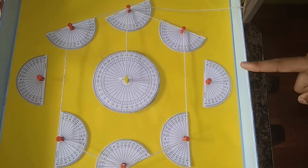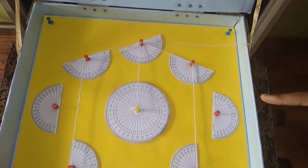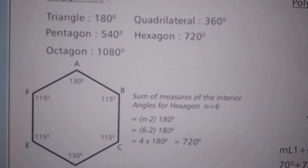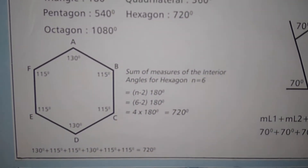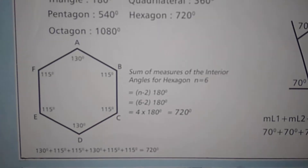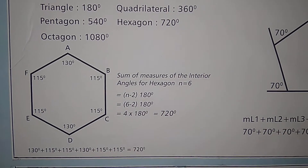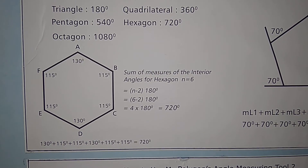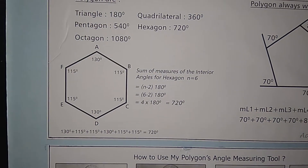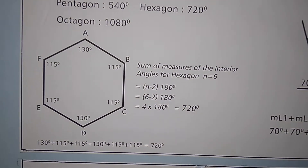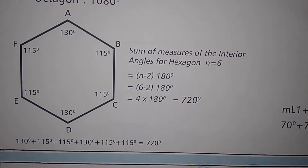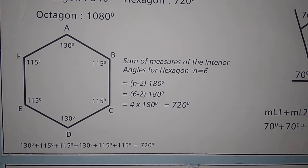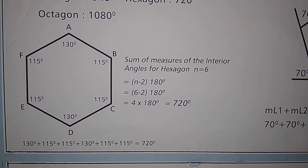Take this example. We have a hexagon. To find the sum of angles of a hexagon, we will use this formula. Sum of measures of interior angles equals n minus 2 into 180 degrees, where n is the number of angles, that is 6. Therefore, 6 minus 2 into 180 degrees is 4 into 180 degrees, which is equal to 720 degrees.